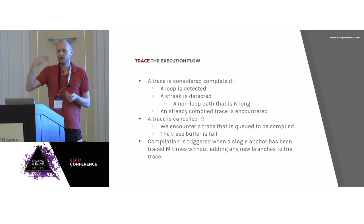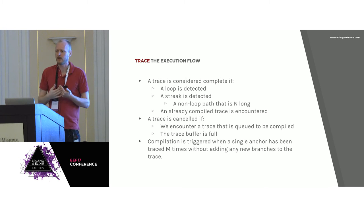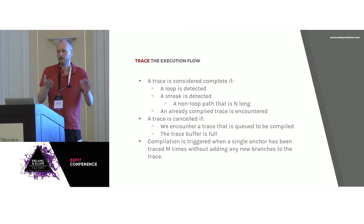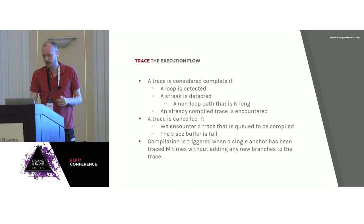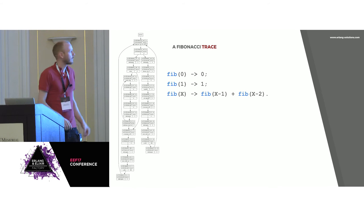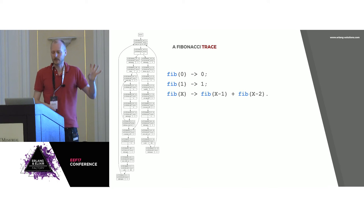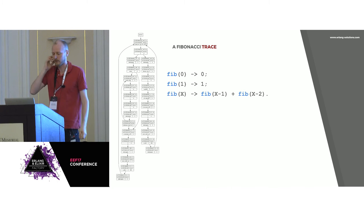We do multiple iterations of a trace — just because a trace is run once, we don't compile it. We run it currently 16 times, and when a trace has been run 16 times without any new paths being discovered, that's when we compile it into native code. Let's have a look at the Fibonacci trace. This function traces into something quite nice: we have a distinct right side and a distinct left side, which seems quite optimal for our tracing to optimize.